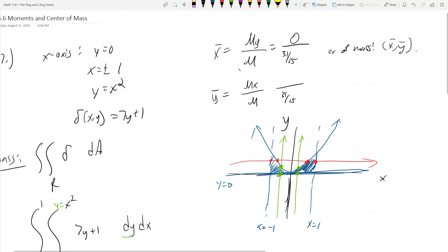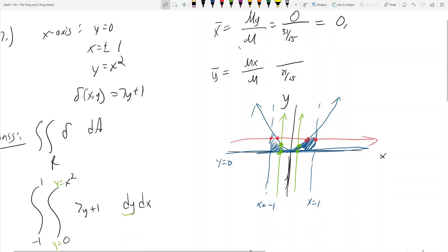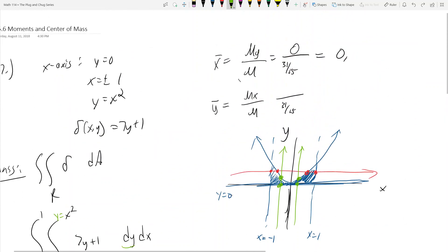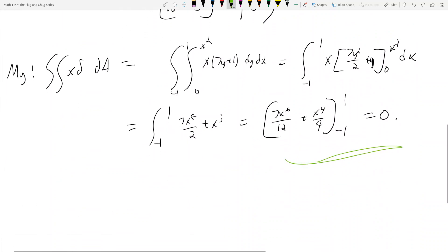Well, it's just the integral we set up up here, it's just this guy multiplied by x. So it's x times 7y plus 1 dy dx with the same exact bounds. So from 0 to x squared and from negative 1 to 1. This is going to be the integral from negative 1 to 1 of 7x to the 5th over 2 plus x cubed, which equals 7x to the 6th over 12 plus x to the 4th over 4 from negative 1 to 1. And this is going to be 0 because if you plug in 1, you're going to get the same thing if you plug in negative 1. Because when you raise negative 1 to any even power, it's just going to be 1. So this guy right here is 0, and we should have seen that coming.